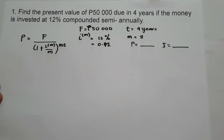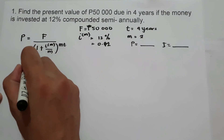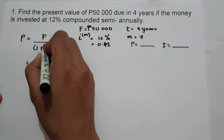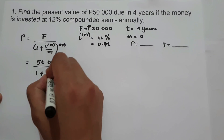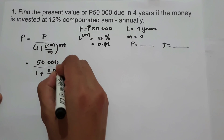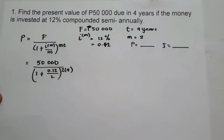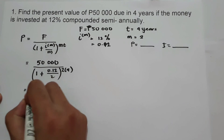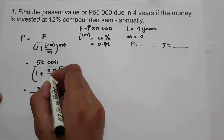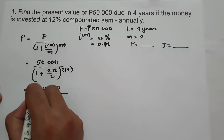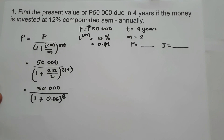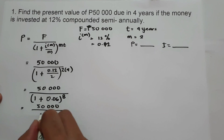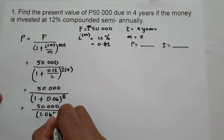To find the principal, let us substitute the given into the formula. We have P equals 50,000 over 1 plus 0.12 over M, that is 2, raised to 2 times 4. To simplify, we have 50,000 over 1 plus 0.12 divided by 2, that is 0.06, raised to 2 times 4, that is 8. Then we have 50,000 over 1 plus 0.06, that is 1.06, raised to 8.